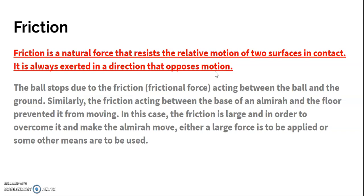Friction is always exerted in a direction that opposes motion. Whatever direction something is moving in, friction always acts in the opposite direction, because it prevents motion from occurring. If we are applying motion in the direction of east, then friction will act automatically in the direction of west. So the direction of friction is always opposite to the direction of motion.